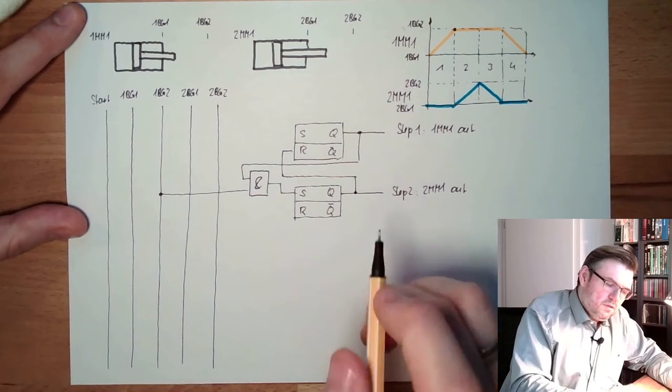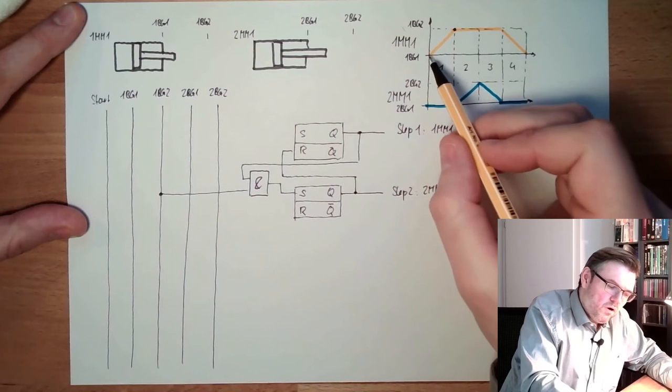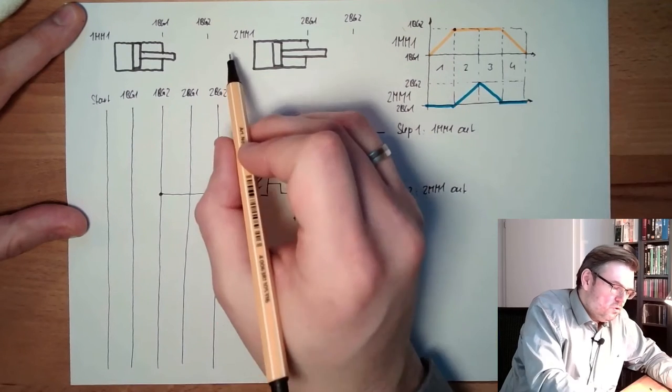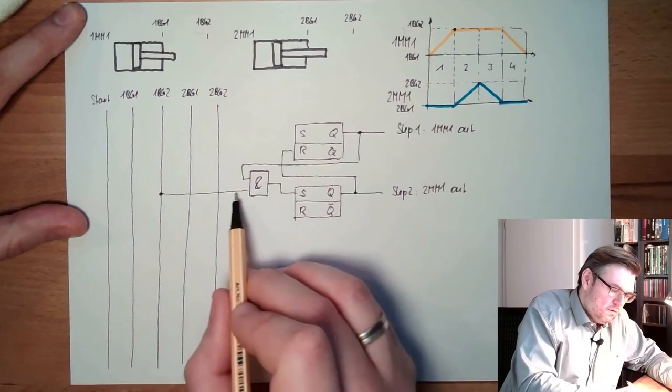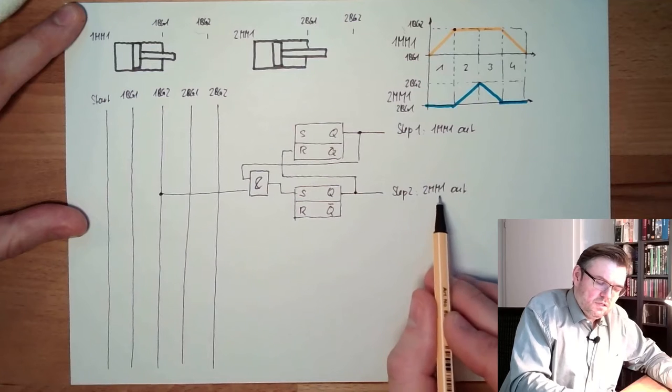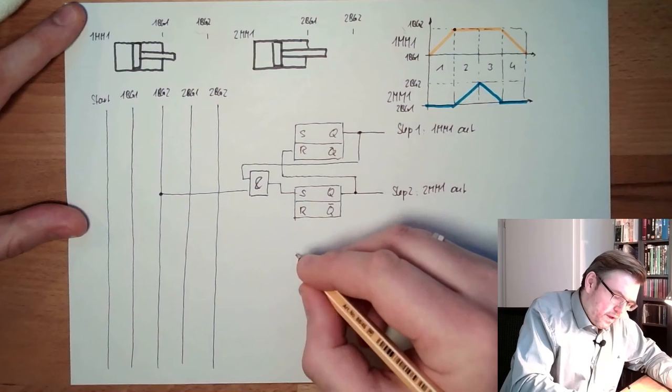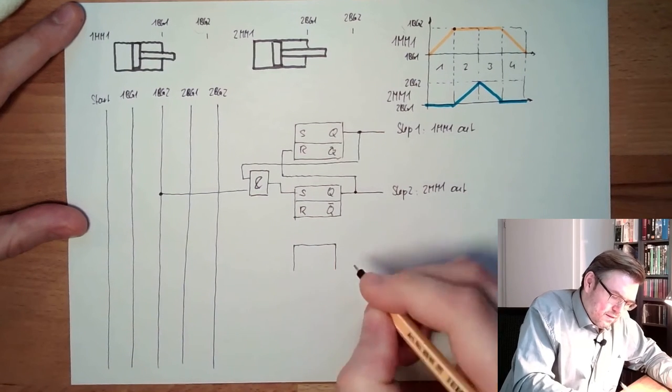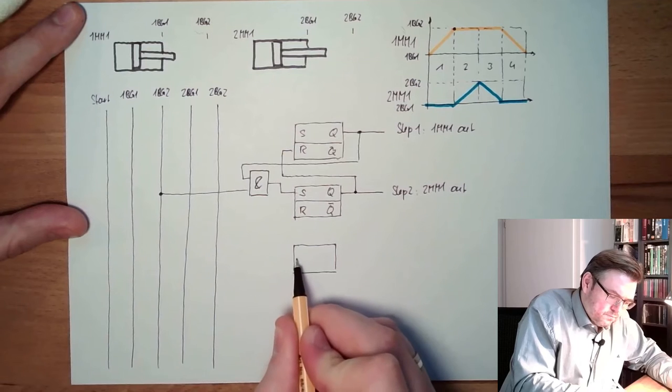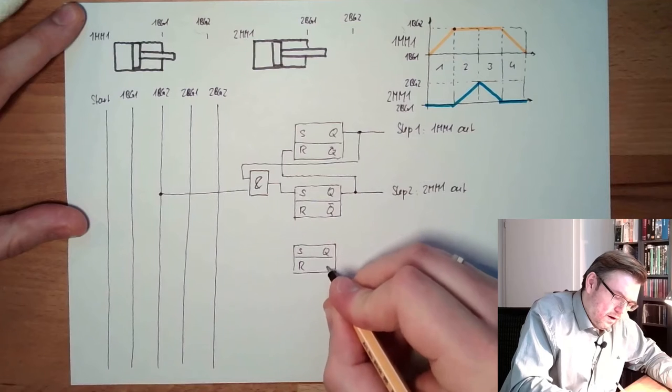So we set now the command one MM1 out. One MM1 out is going out, and as soon as it touches the limit switch here, we will switch to step number two. Step number two, two MM1 out, and I will do exactly the same here as QRQ.